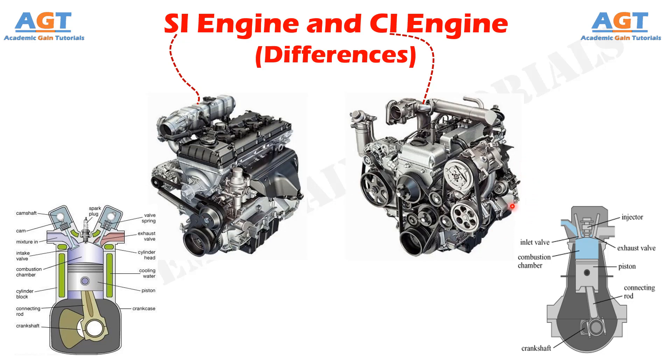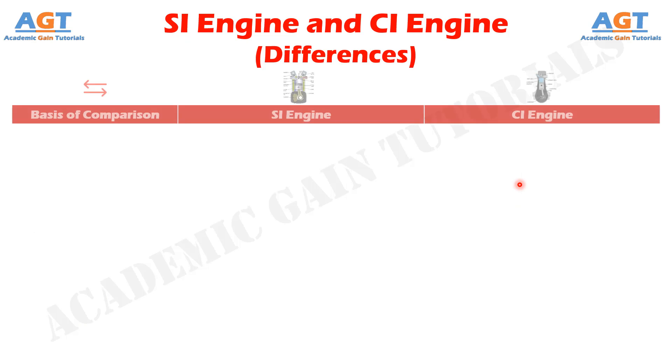Due to the high compression ratio, CI engines produce more power. Due to incomplete combustion of fuel, they produce more hydrocarbons, which leads to air pollution. There is a noise and vibration problem in CI engines, and the maintenance cost of CI engine is more compared to SI engines. They are mostly used in heavy-duty vehicles such as buses, trucks, railways, ships, etc.